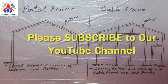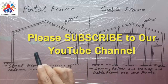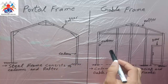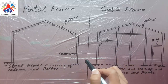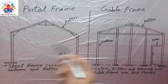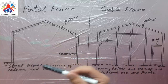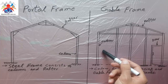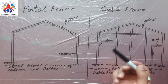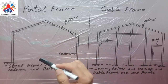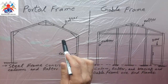The gable frame is normally the end frame. If you have a steel structure building, these are the end frames. For example, if you enter the building you will find this type of structure and these types of members. Once you enter the building you will find this type of frame.